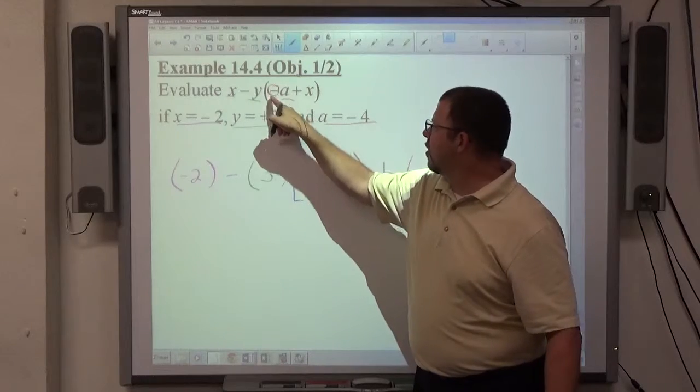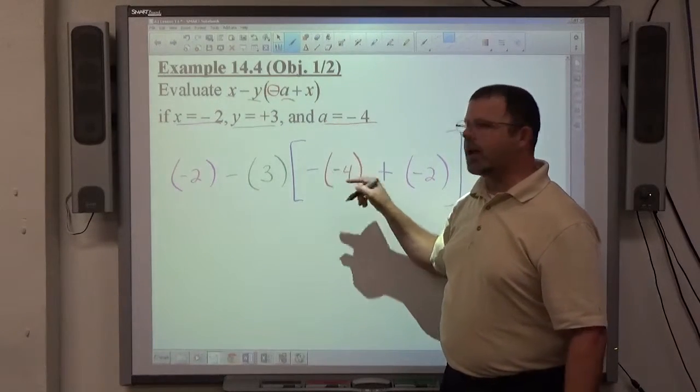This minus sign is part of the structure. A is negative 4. So, I end up with minus minus 4 for that piece.